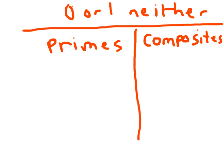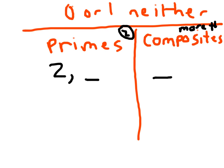Think about the number 2 — are there any numbers we can multiply together to get 2 besides 1 and itself? No, so 2 is a prime number. Three is also prime. Four, however, is composite — the factors of 4 are 1, 2, and 4, giving it three factors, which is more than two.